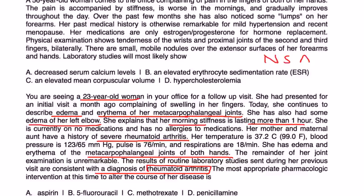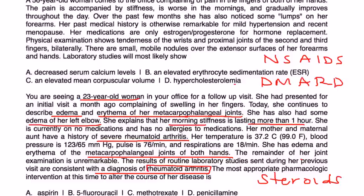The most appropriate intervention at this time to alter the course of her disease is. Well, what choices do we have? We have NSAIDs. We have disease-modifying anti-rheumatic drugs. And we have steroids. And of those, it looks like the only one they list is one of the disease-modifying anti-rheumatic drugs. And they would list a very popular one, methotrexate. So that would be probably the most appropriate of the answer choices. Thank you.